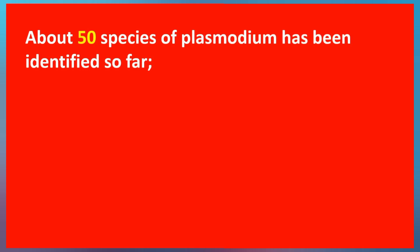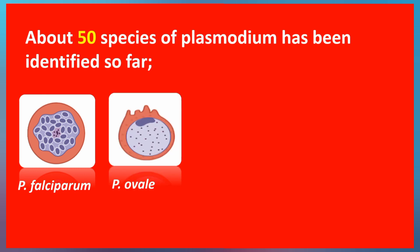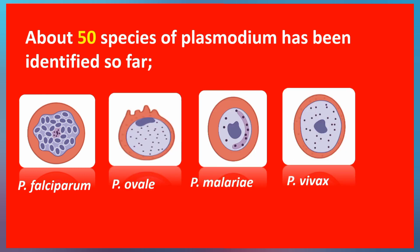We have about 50 species of Plasmodium parasites discovered so far, and out of these 50 species only four have been found to cause malaria. These four include Plasmodium falciparum, Plasmodium ovale, Plasmodium malariae, and Plasmodium vivax. Recently, a fifth species called Plasmodium knowlesi has also been reported to cause malaria.